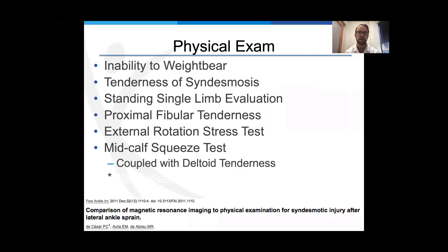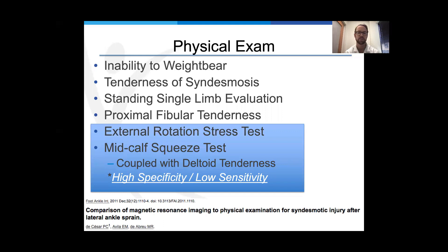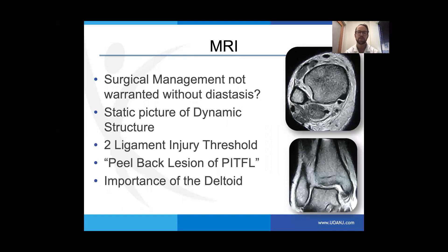The physical exam — this is not the typical ankle sprain. Patients have an inability to bear weight. They have tenderness and potentially swelling of the syndesmosis. They can't do a single limb evaluation. The most important thing is really the external rotation stress test or cotton's test, which has the highest specificity for this injury, but unfortunately low sensitivity.